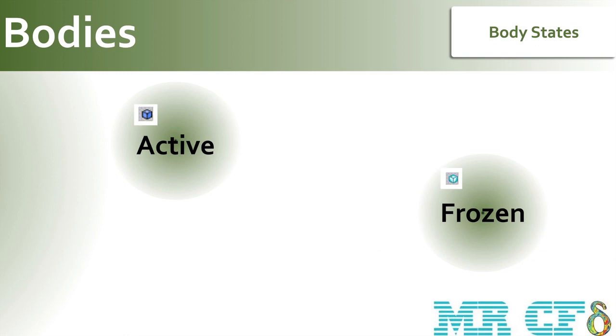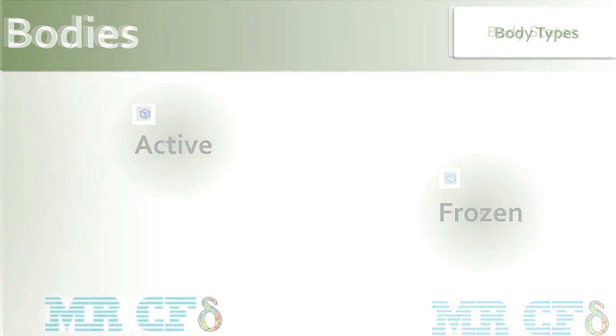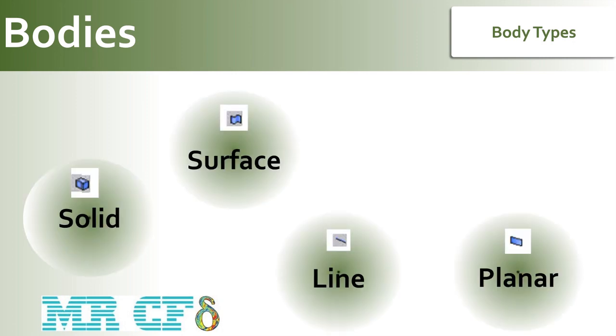To move a body from the frozen state to the active state, select the body and use the unfreeze feature. Frozen bodies are displayed in white in the tree outline. There are five types of bodies that the ANSYS DesignModeler application supports: solid, surface, line, planar, and winding. The status of a body is indicated by a small check mark or X next to the body icon in the tree outline.